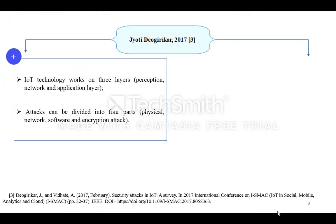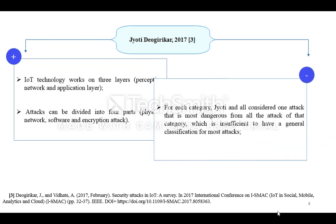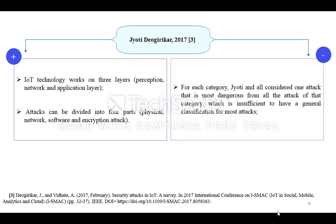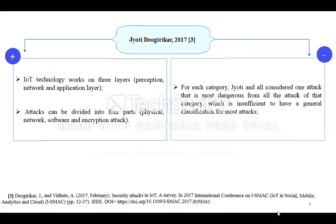IoT technology works on three layers: perception, network, and application layer. Attacks can be divided into four parts: physical, network, software, and encryption attack. For each category, only one attack is considered — the most dangerous from all the attacks of that category — which is insufficient to have a generic classification for IoT attacks.